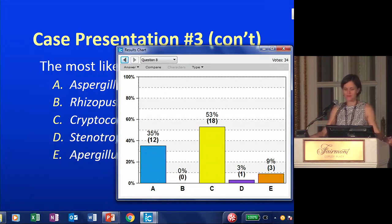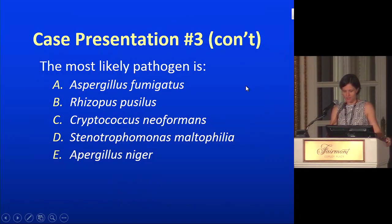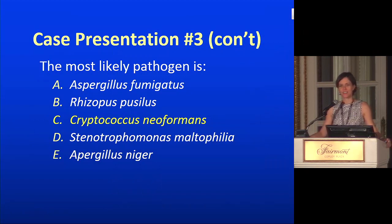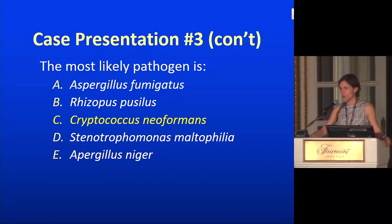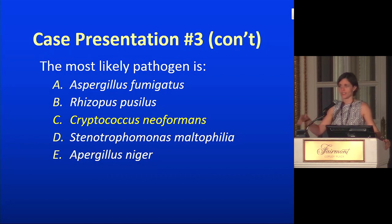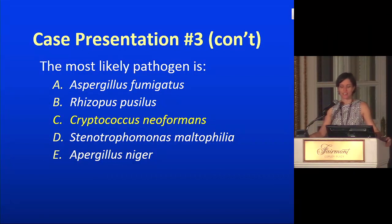The correct answer is C, Cryptococcus neoformans. Cryptococcus is the only yeast on this list. Aspergillus fumigatus, Aspergillus niger, and Rhizopus all grow as molds, rarely in blood cultures, and if they do, the lab would call and say there's a mold growing, not a yeast. Stenotrophomonas is actually a bacterium. Let's talk more about fungal infections.